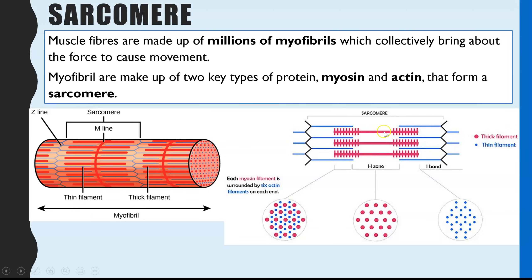It's labelled a bit clearer on this diagram. In your sarcomere, the myosin protein is much, much thicker, and that's visibly shown by the thicker lines. The actin protein — or actin filament — is a much thinner protein, and we can see that here. They are actually layered: a layer of actin, then myosin in the middle, then actin, myosin, and so on.